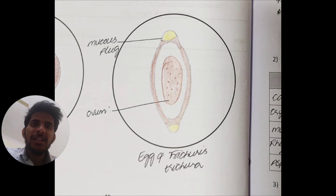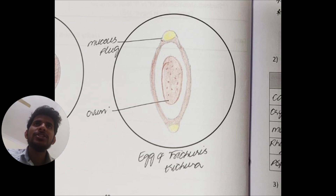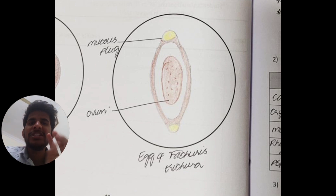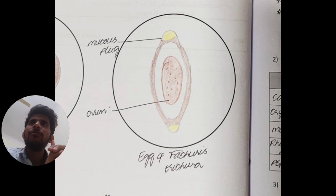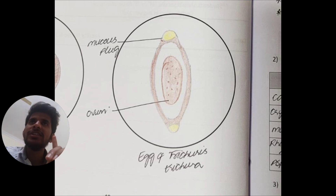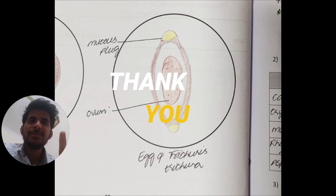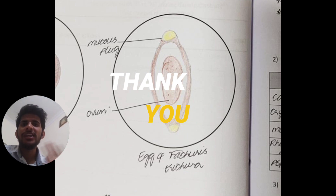Schistosoma has a terminal spine. The three Schistosoma species are Schistosoma haematobium, Schistosoma japonicum, and Schistosoma mansoni. One of them has a lateral spine — you should look it up and tell in the comments. See you in the next video — until then, Jai Hind, Jai Bharat.